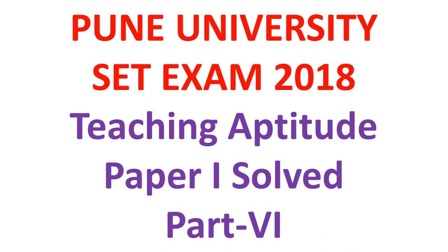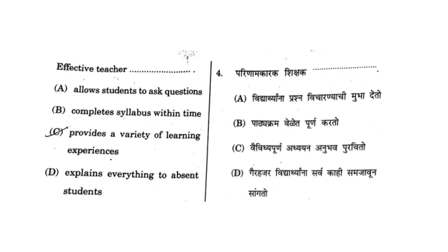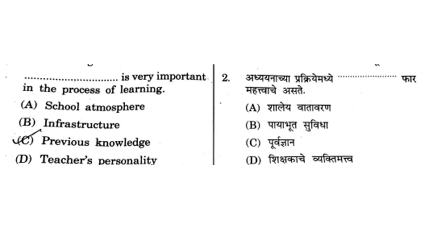Moving on to our first question: the effective teacher. Options were: A) allow students to ask questions, B) complete syllabus within time, C) provides a variety of learning experiences, D) explains everything to absent students. The correct option here is C — provides a variety of learning experiences — as among the four options, C is the best option.